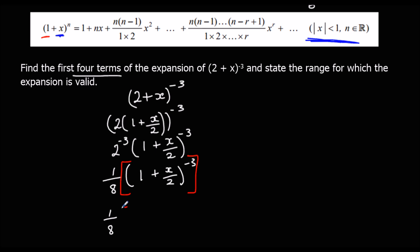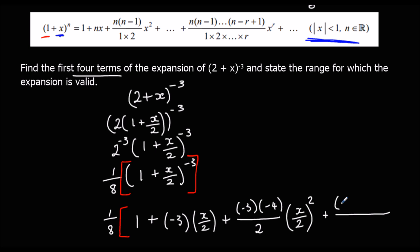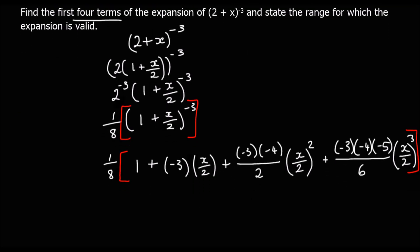So we've got 1/8 times the expansion. n is −3, x is x/2. So: 1 + n·x = 1 + (−3)(x/2), then + n(n−1)/2 · x² = (−3)(−4)/2 · (x/2)², then + n(n−1)(n−2)/6 · x³ = (−3)(−4)(−5)/6 · (x/2)³. There we have our expansion; we just need to simplify now.